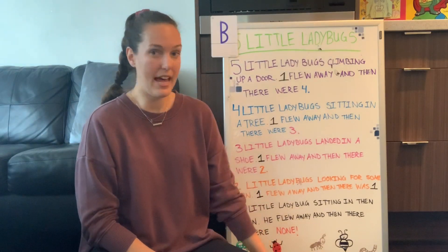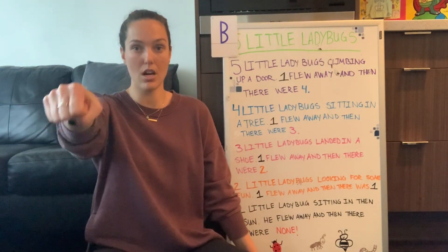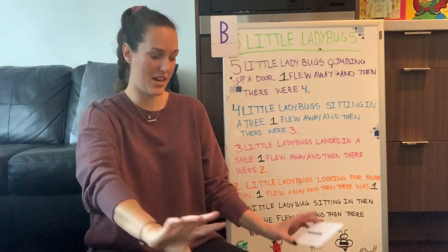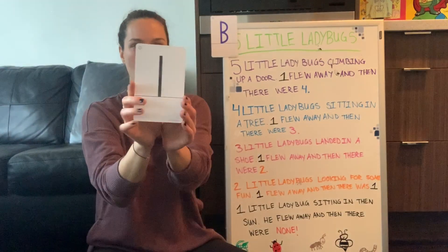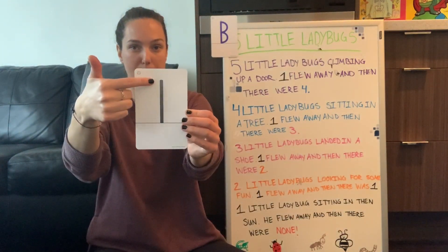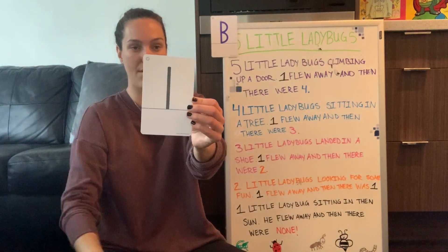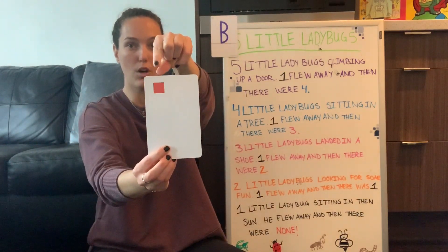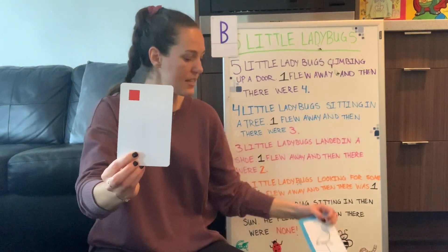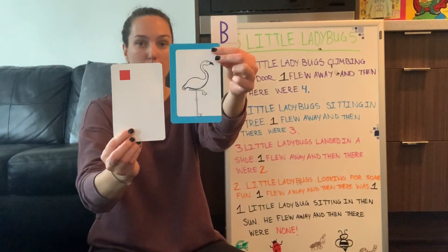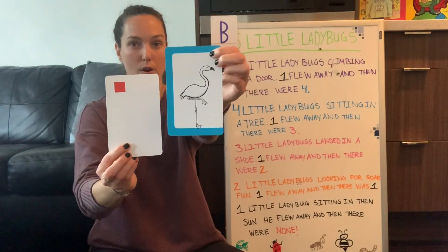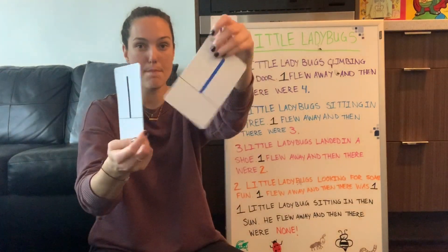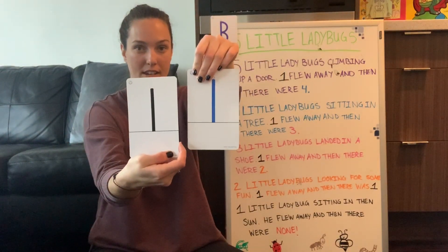Last week's number of the week was the number one — the very first number in our number line. This is what the number one looks like: very simple, just a big line down. This is what the number one looks like using blocks — one block. And this is what it looks like for animals — just one flamingo, and the flamingo was on one leg. The number one.